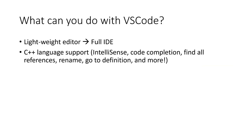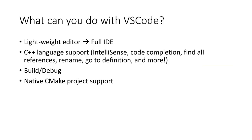VS Code has great C++ language support. It has IntelliSense, code completion, and a bunch of productivity features such as find all references, rename, go to definition, and more. You can build and debug your C++ projects in VS Code — it will find whichever compiler or debugger you have installed on your machine. We also have native CMake project support in VS Code as we recently started maintaining the CMake Tools extension. CMake is one of the most popular build systems for C++ projects, especially for open source projects, and the CMake Tools extension makes it super easy to configure CMake projects in VS Code.